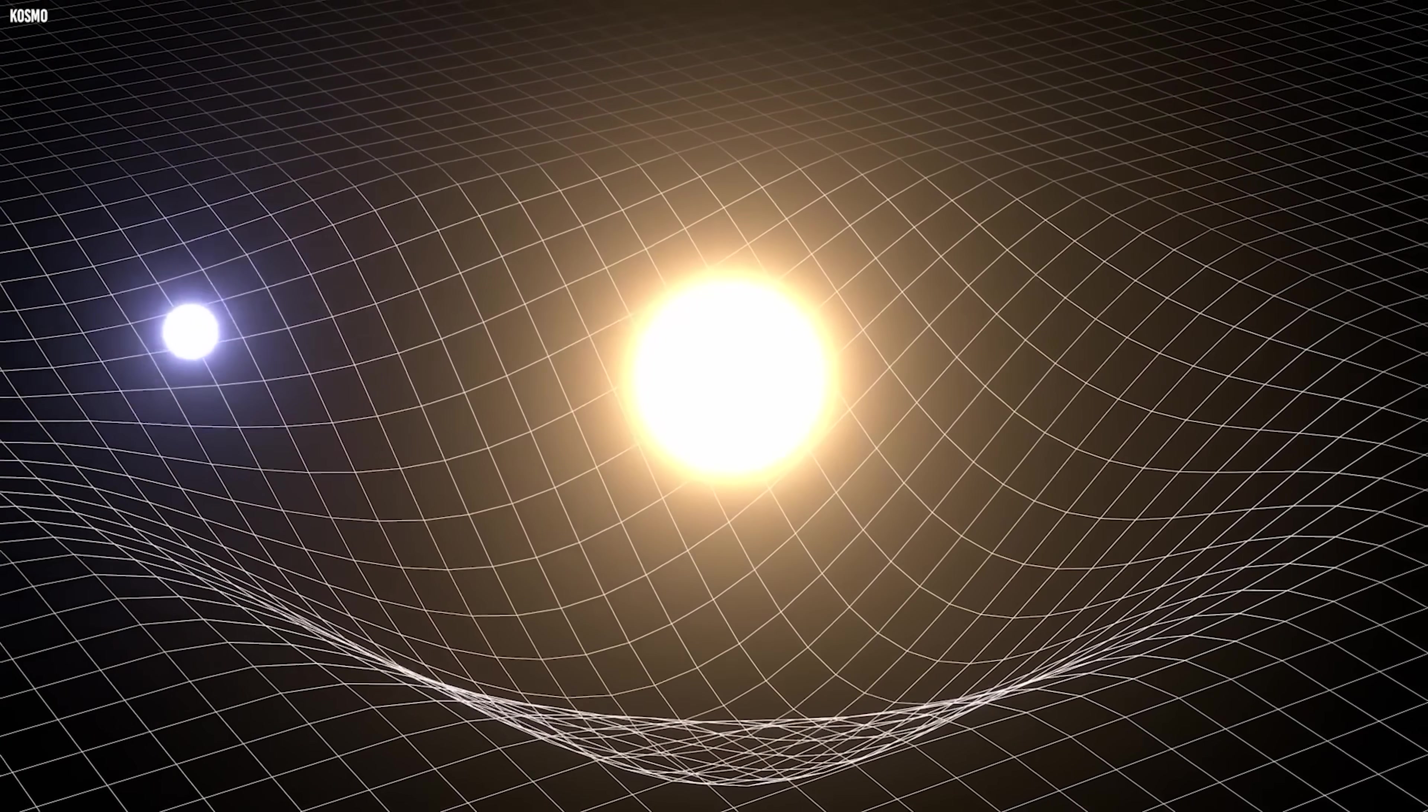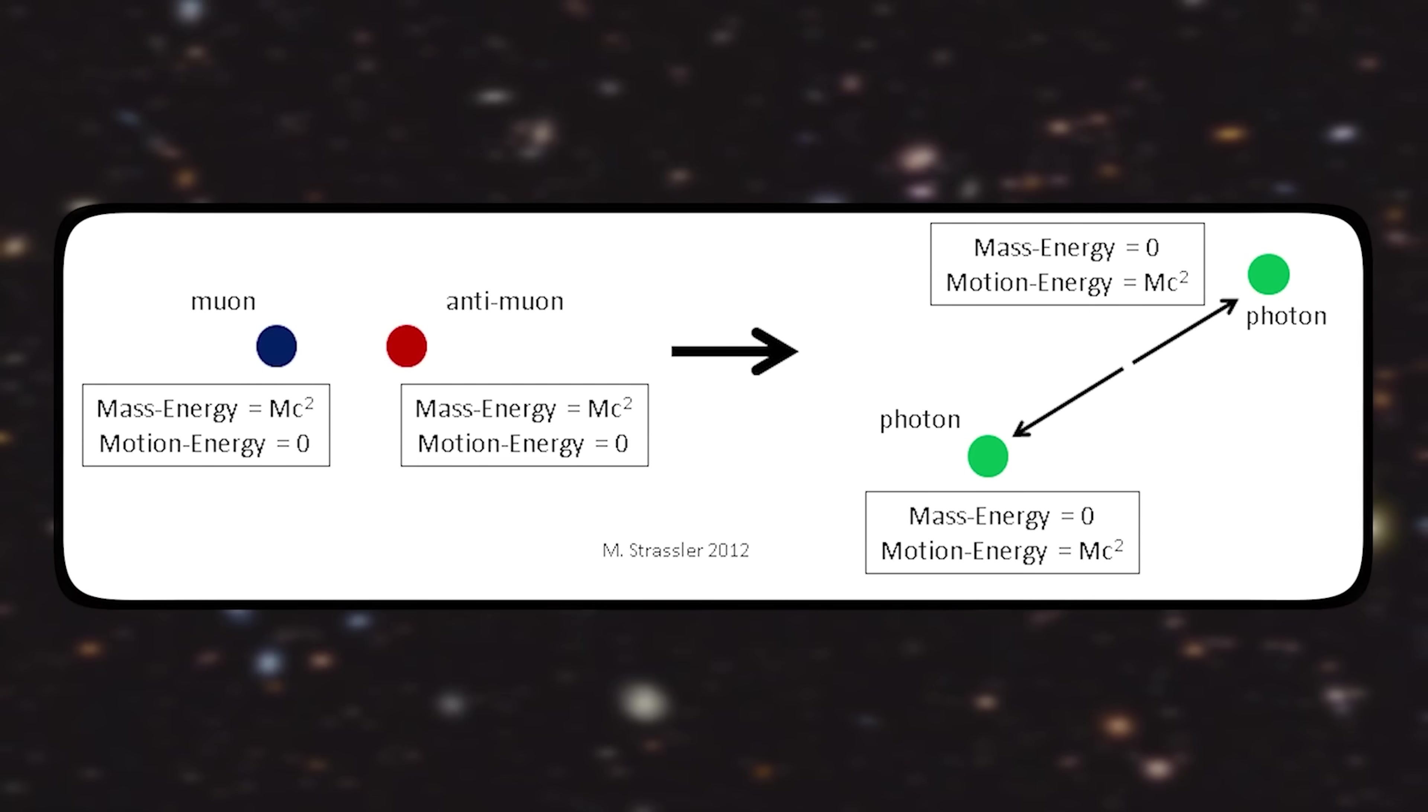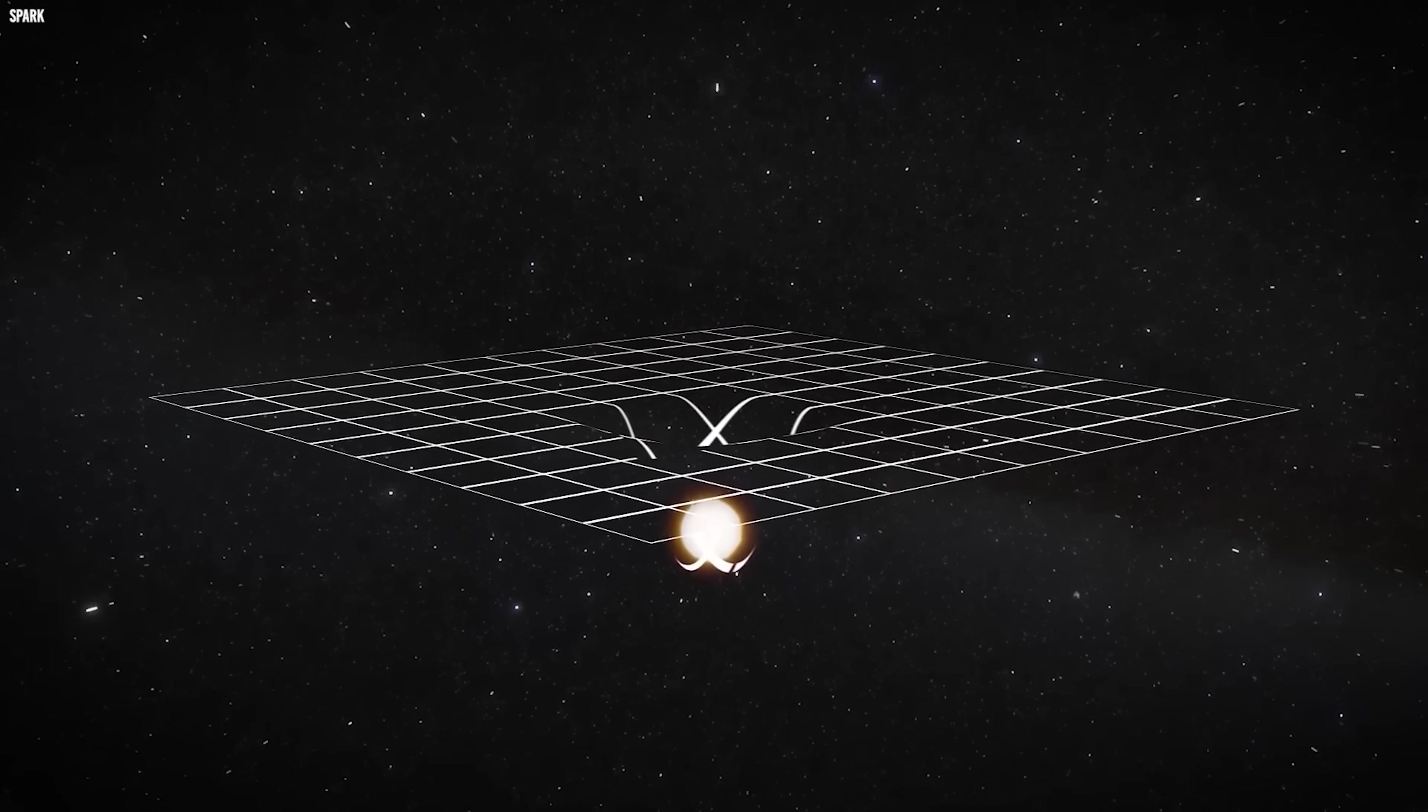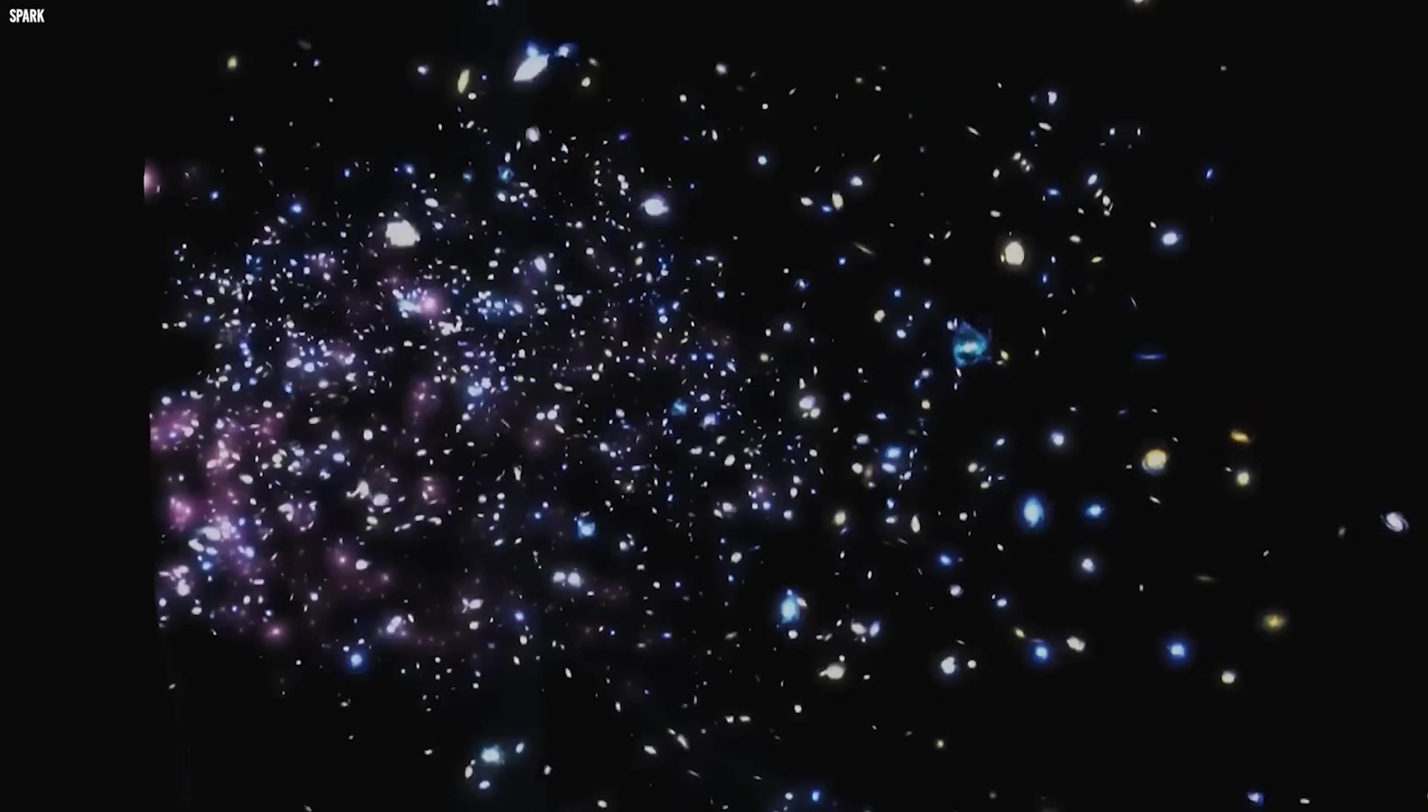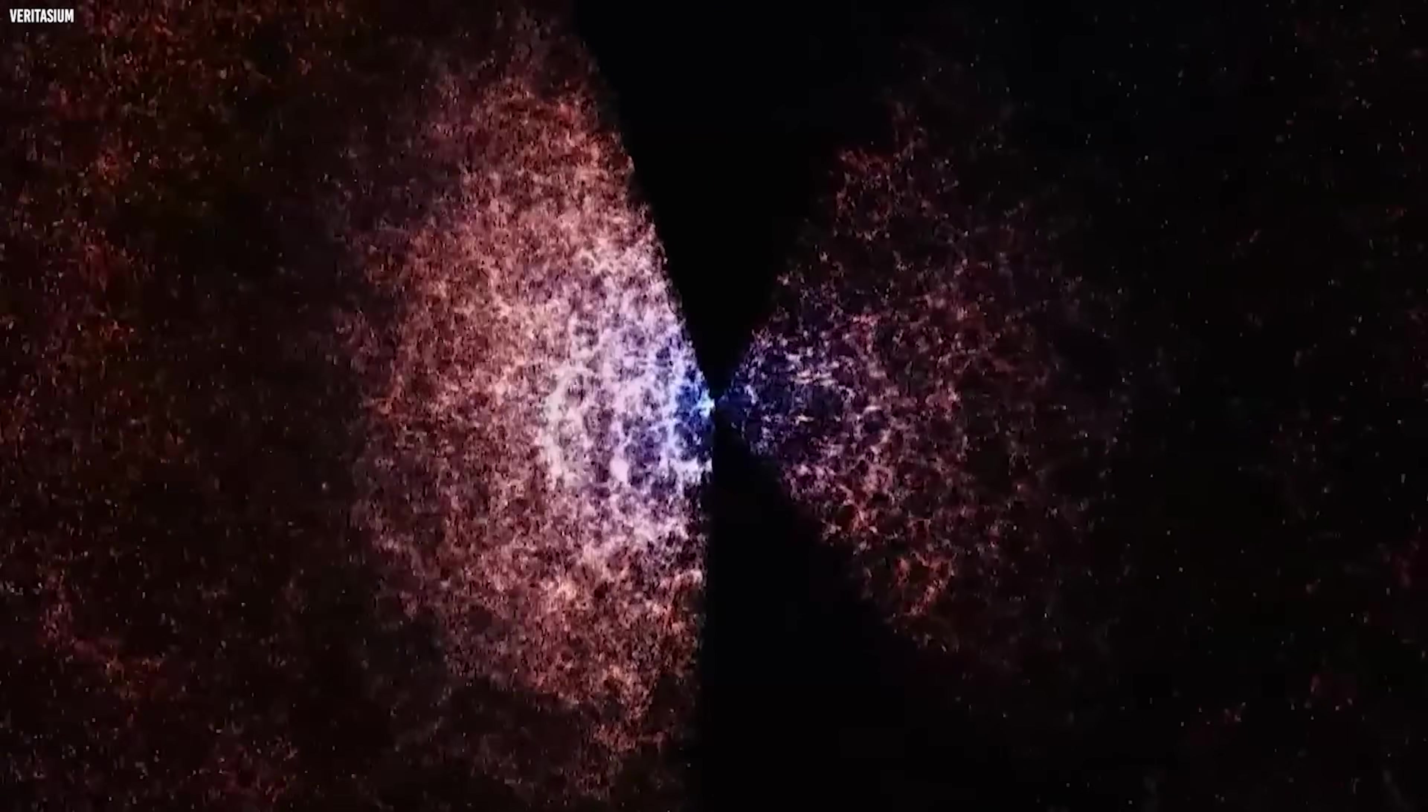Quantum theory tells us that even empty space is restless. Particle-antiparticle pairs constantly flicker into existence, collide, and vanish before anyone can notice. But when spacetime is sharply curved, that delicate balance can be disturbed. The pairs can be pulled apart before they annihilate, allowing both particles to escape as real, measurable entities, carrying energy with them.